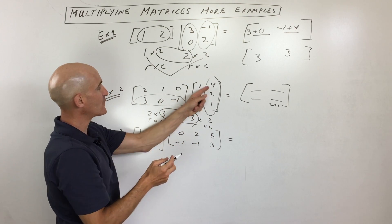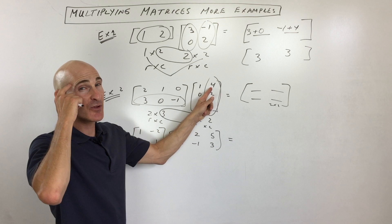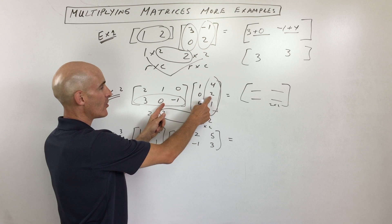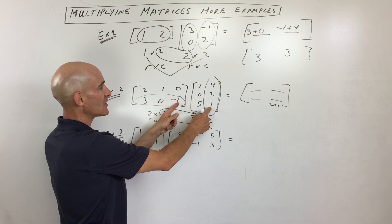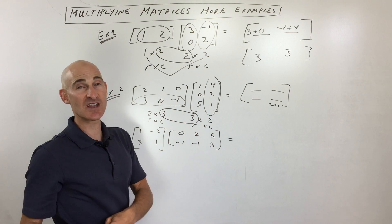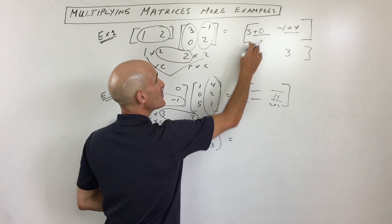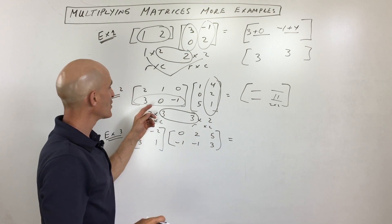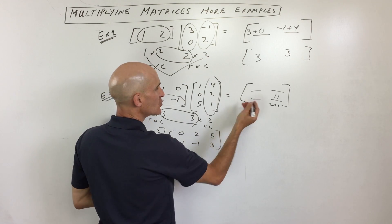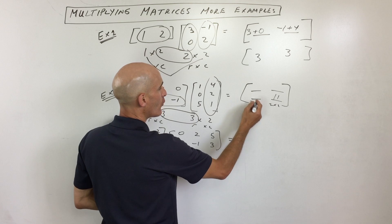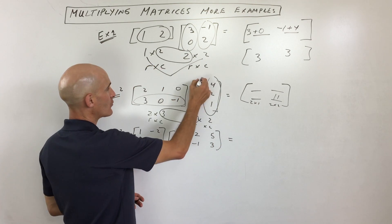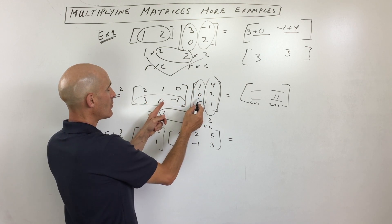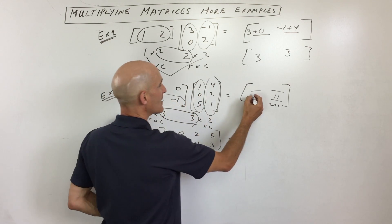So let's do that. Three times four is 12. Zero times two is zero. Negative one times one is negative one. So 12 plus zero plus negative one, which is 11. You don't have to do that in your head — you can do your work on the side and then put your final answer there. Let's do this one here next — this is the second row, first column. So I'm going to take the second row by the first column. That's three plus zero plus negative five, which is negative two.